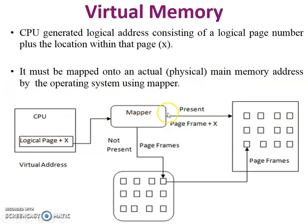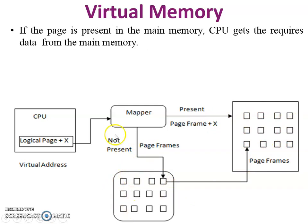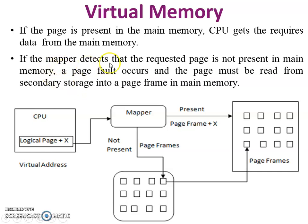The virtual address comes to the mapper, which checks or verifies the page frames available inside main memory. If the page is present in main memory, the CPU gets the required data from main memory. The mapper finds the frame, retrieves it, and gives it to the CPU for program execution.